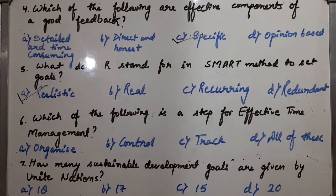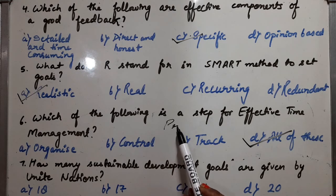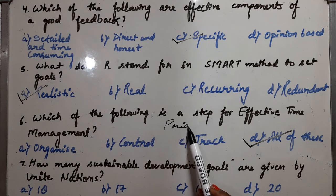Sixth MCQ: Which of the following is a step for effective time management? The options given — organize, control, track — are all steps for effective time management, so the correct answer is all of these. One more step given in the book is prioritize. We should prioritize our work.